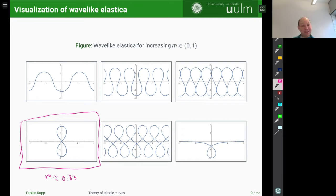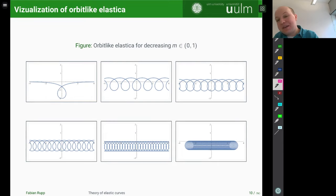And why this is the borderline elastica, you can see if you plot the orbit-like elastica now, because they start for m equal to 1 exactly with the borderline elastica. So the borderline elastica lies exactly in between the wave-like and the orbit-like elastica. So what happens now if I further decrease the m in the orbit-like case, then the loops will form far away from the origin for m close to 1. But as m decreases, they will approach this loop in the middle here, as you can see in the second picture.